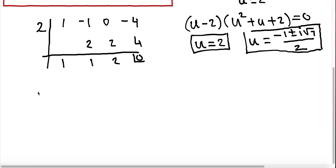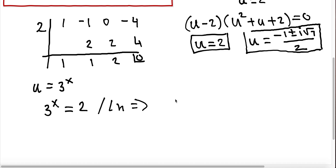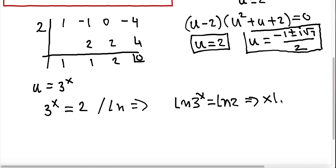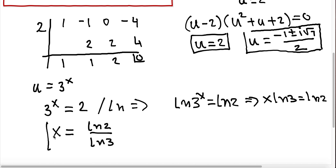Now if we want to find x, we already know the substitution: u equals 3 to the x. Plugging in the real solution, we have 3 to the x equals 2. Taking the natural log on both sides, x times ln 3 equals ln 2. Dividing everything by ln 3, we get one real solution: x equals ln 2 divided by ln 3.